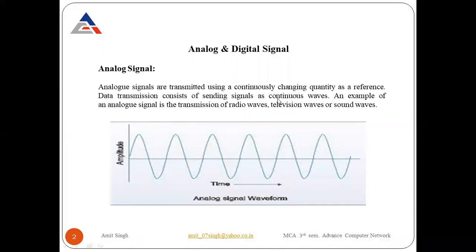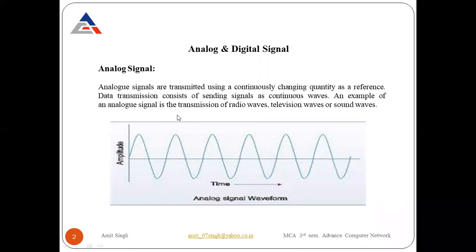The first is analog signals. Analog signals are transmitted using a continuously changing quantity as a reference. Data transmission consists of sending signals as continuous waves. An example of an analog signal is the transmission of radio waves, television waves, or sound waves. Analog signals have continuous values.